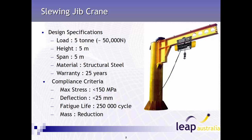The material used is structural steel that will be welded together requiring a 25 year warranty life. The compliance criteria outlines the stress on the jib must be under 150 MPa, resulting in a 1.6 factor of safety against yield, deflection under 25 mm, and be able to take 40 cycles a day according to 250 working days over 25 years, and aim to reduce mass if possible.